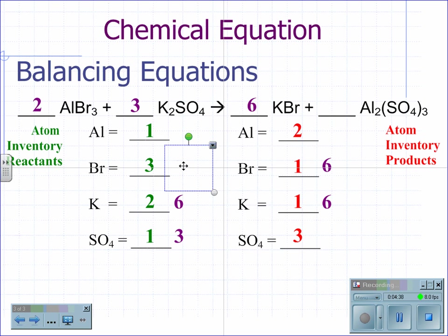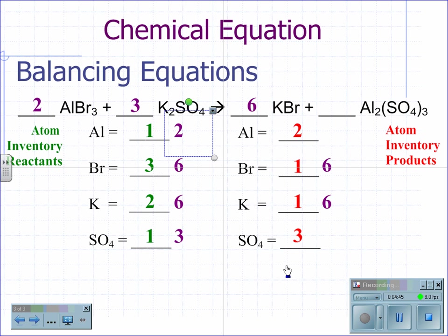This changes the amount to six bromine and two aluminum. Now I have a balanced chemical equation of two aluminums, six bromines, six potassium, and three sulfates on both sides of the equation.